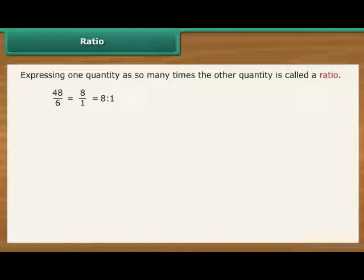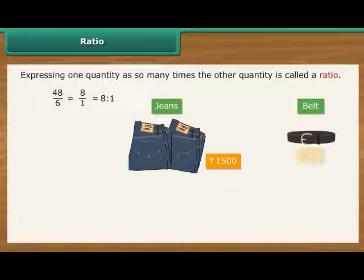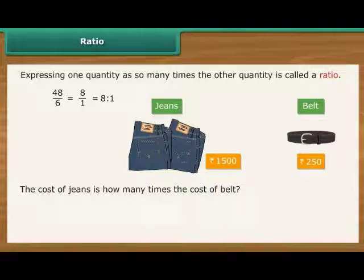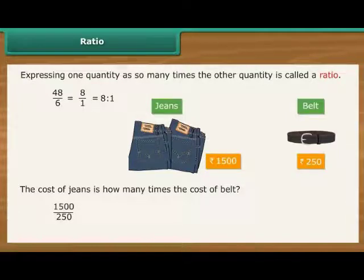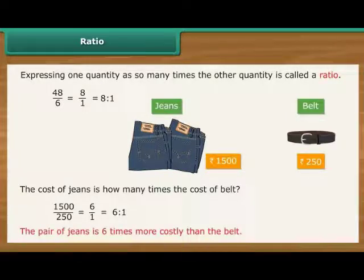Let us look at another example of ratio. Tushar bought a pair of jeans for Rs. 1500 and a belt for Rs. 250. The cost of jeans is how many times the cost of the belt? To calculate the ratio, first divide 1500 by 250. It is the same as 6 divided by 1. Express it as a ratio, that is 6 is to 1. Therefore, we can say that the pair of jeans is 6 times more costly than the belt.